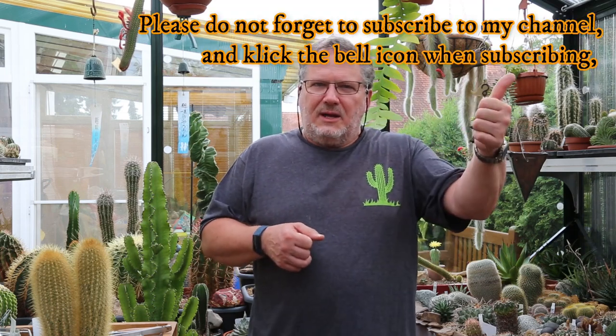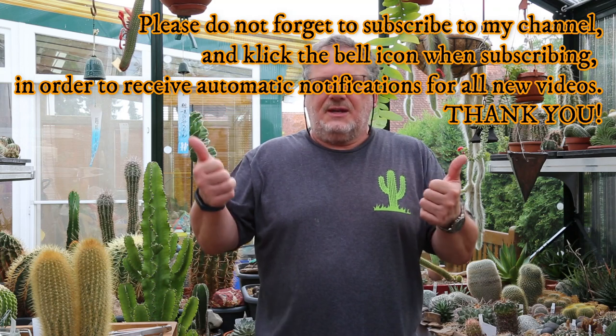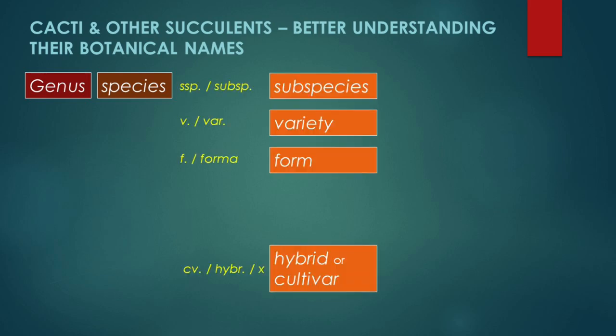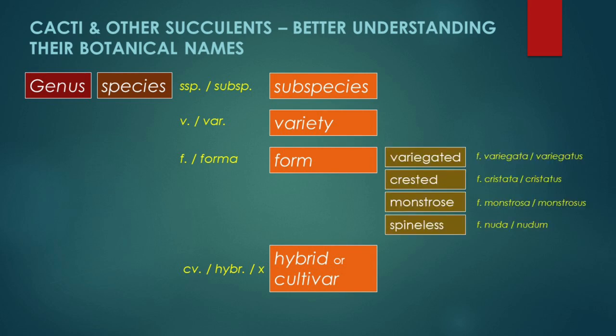Hopefully that's all a little clearer than before. A very brief recap: we can either have a common name or a scientific botanical name. Common names are perfectly fine to use but obviously not unique and not scientifically accurate. Botanical or scientific names would typically consist of a genus name, a species name, and perhaps a subspecies name, a variety, or a form — or we may be dealing with a hybrid or a cultivar. Quite straightforward.